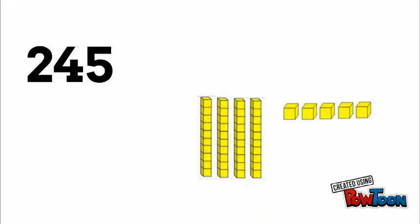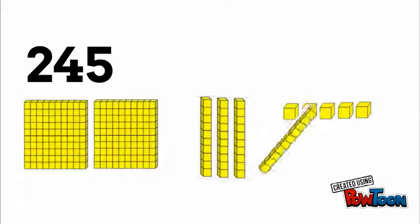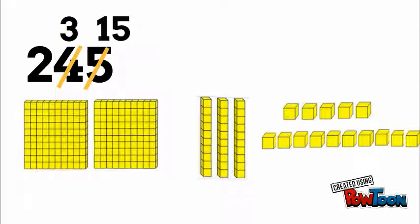Here I have 245 and I've modeled it with my base 10 blocks. So we're gonna unbundle one 10 into 10 ones. You see we took one of our 10 rods and turned it into 10 of our ones cubes. Now I see we only have three tens left but now we have 15 ones.